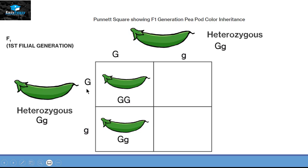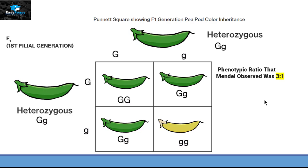The third possibility is the capital G with small g, so it is again a heterozygous green plant. The last combination is small g with small g and that is the characteristic for a yellow pod. That's why the phenotypic ratio for Mendel's observation was 3 to 1. And if we look at the genotypic ratio then it will be 1 to 2 to 1.